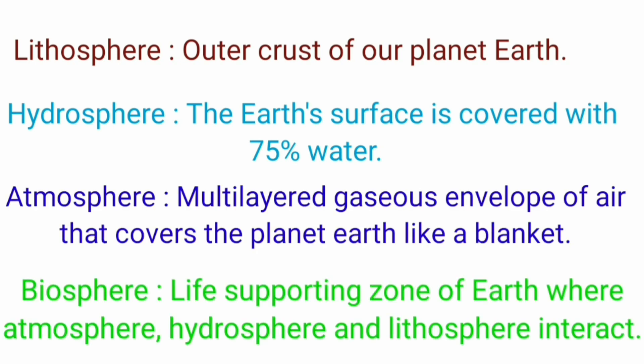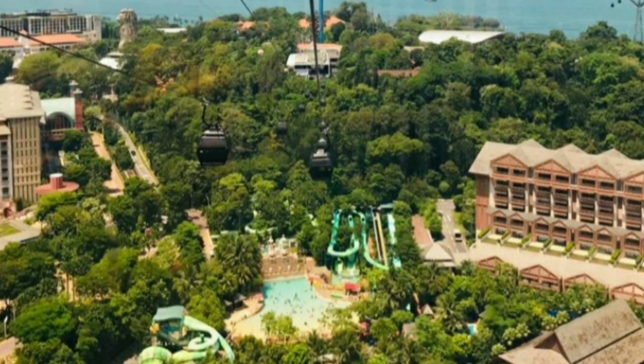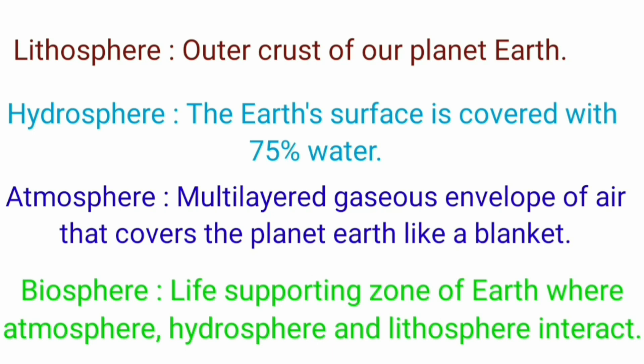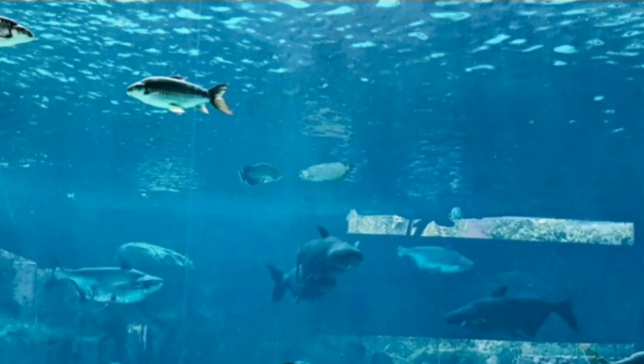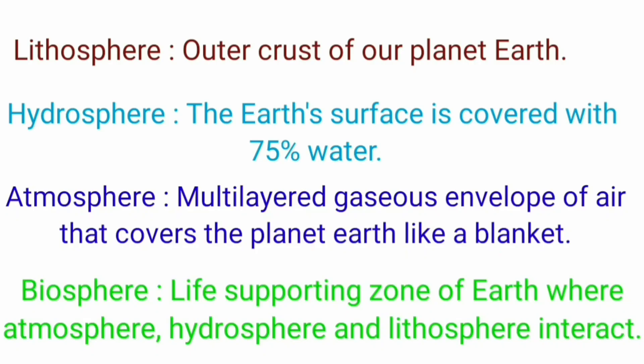Lithosphere is the outer crust of our planet earth, which is called land. The earth's surface is covered with 75% of water, found in seas, oceans, rivers, underground water, etc. Earth is known as the blue planet because of the presence of plenty of water.